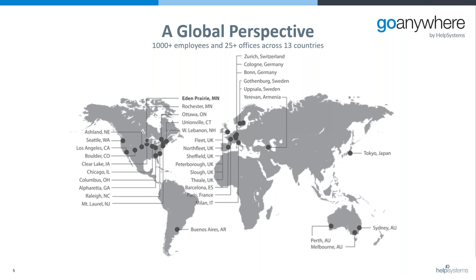You can be safe in the knowledge that no matter where you are, chances are you're pretty close to a Help Systems office. We've got footprints over in America along with our headquarters, and we've got them in Europe and Australia, just to name a few. We started way back in 1982 and we're just short of coming to our 40th anniversary.